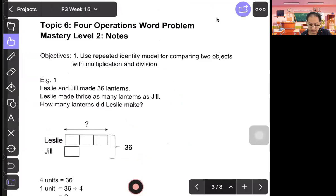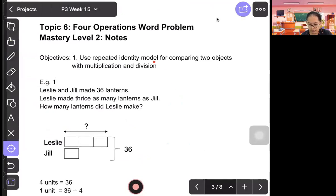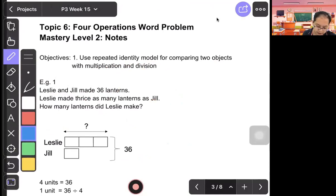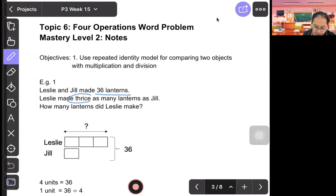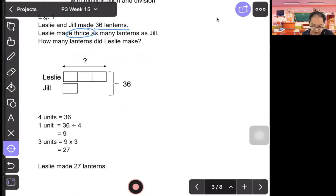Mastery level two. We use repeated identity model for comparing two objects with multiplication and division. Leslie and Joe made 36 lanterns. Leslie made thrice as many lanterns as Joe. How many lanterns did Leslie make? Underline 36 lanterns, circle keyword thrice. In your model, Leslie is three times, three units. Joe is one. All together, 36. So there are four units all together. To find one unit, you divide by 4. That gives us 9. And Leslie is three units. So one more step, 9 times 3 equals 27. Leslie made 27 lanterns.